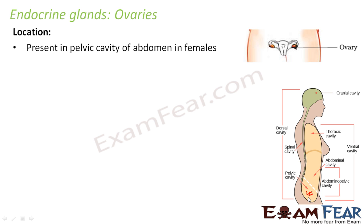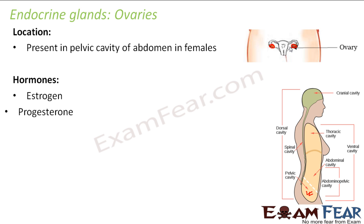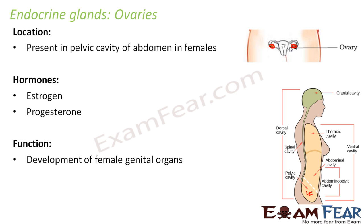The ovaries are located in the pelvic cavity, the lower most part of the abdomen. Here you can see their exact structure — these orange colored structures are the ovaries, and they occur in pairs. The hormones secreted by the ovaries are estrogen and progesterone. These two hormones help in the development of female genital organs.